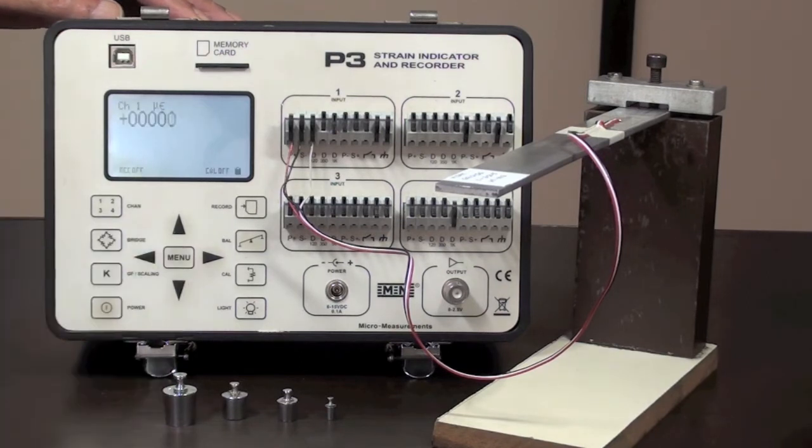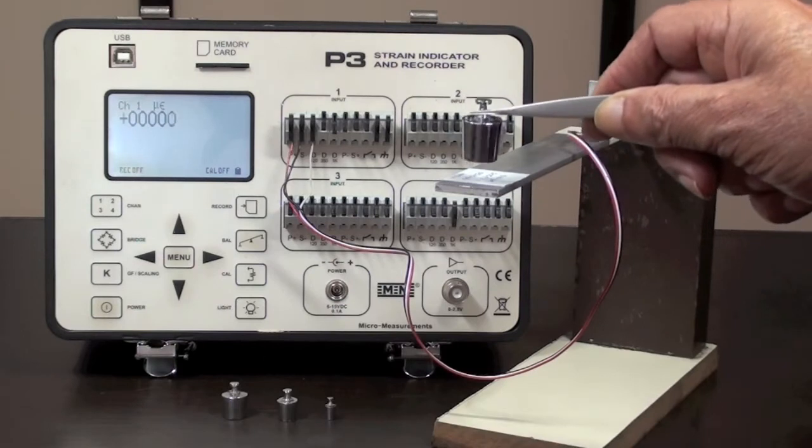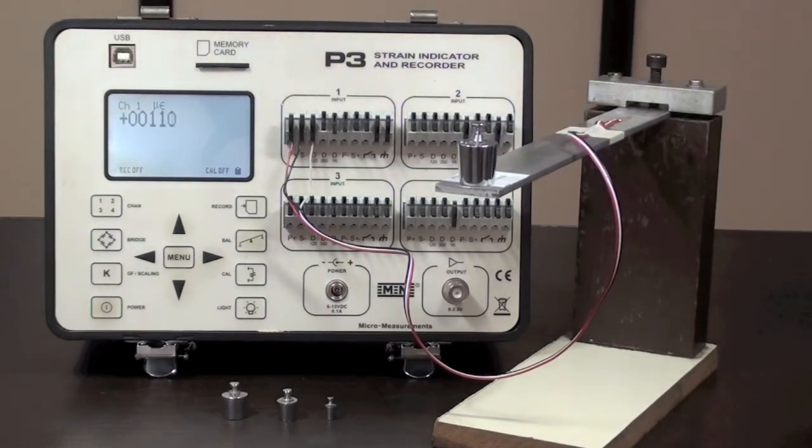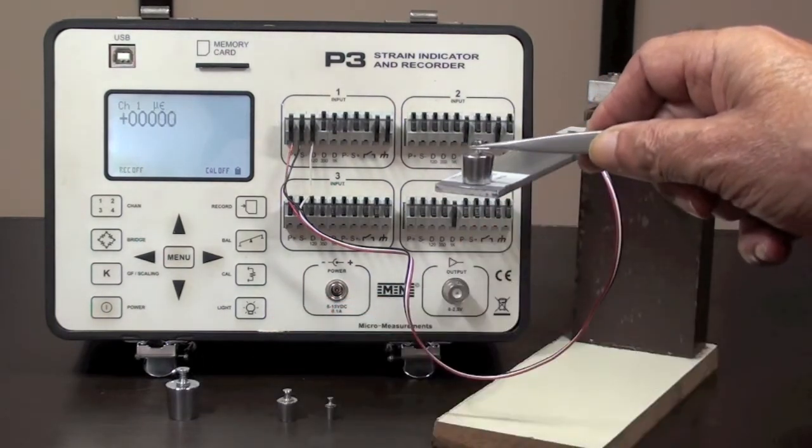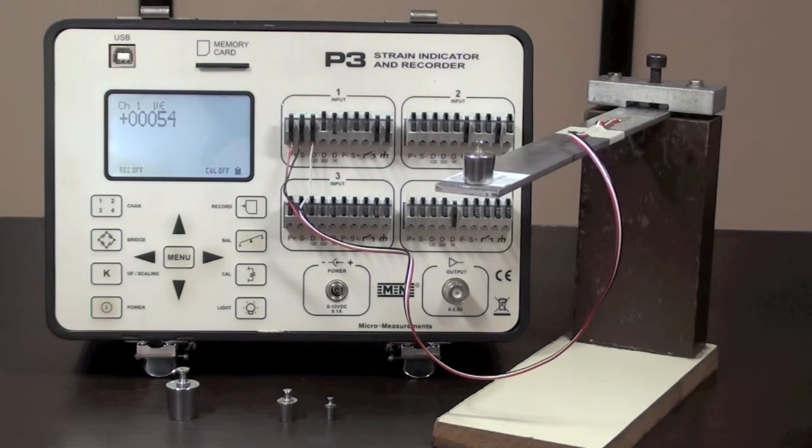Now the last digit on the display will correspond to 0.1 microstrain. With 20 grams on the beam, the reading should be 11.1 microstrain. With 10 grams, it should be 5.5 microstrain.